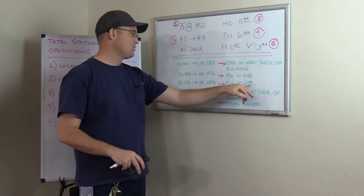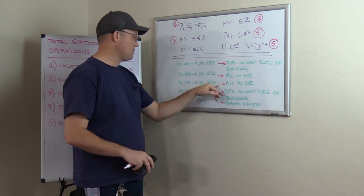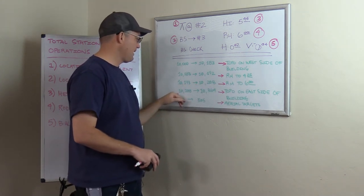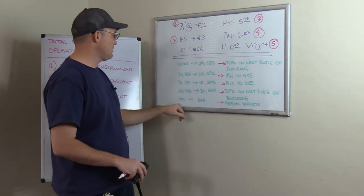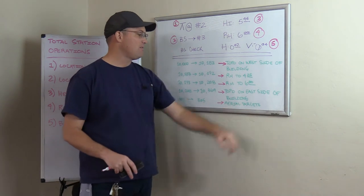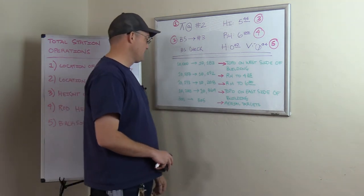Then here he goes back to a six, 10,193 to 10,208. And then from 10,208 to 10,364, he's doing topo on the east side of the building. Then down here at 301 to 305, he's shooting aerial targets.